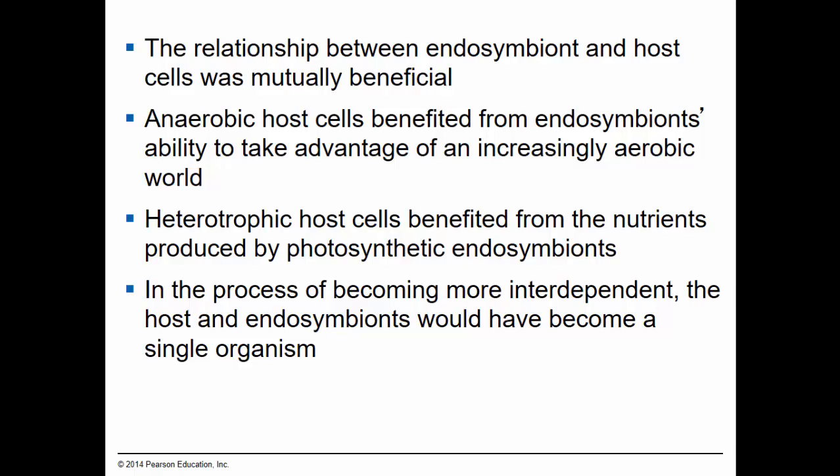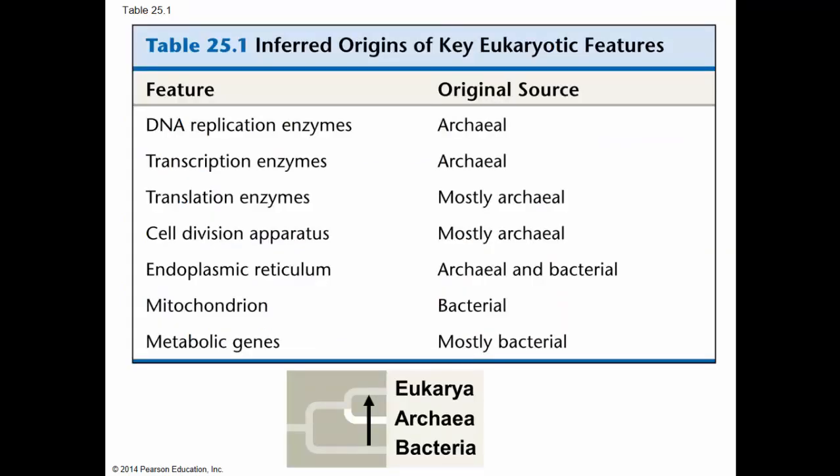Over time, these cells that were consumed and the cells that served as the host became more and more interdependent. Eventually these organisms were considered a single organism since neither the host nor the endosymbiont could survive alone. This table shows some of the probable origins of different features of eukaryotic cells. DNA replication enzymes appear to have originated primarily from members of the domain Archaea, and the same goes for transcription enzymes, translation enzymes, and the cell division apparatus like spindle fibers and microtubules.